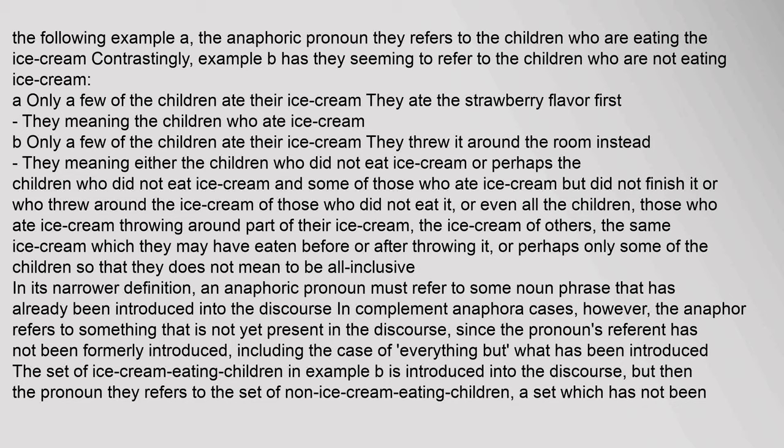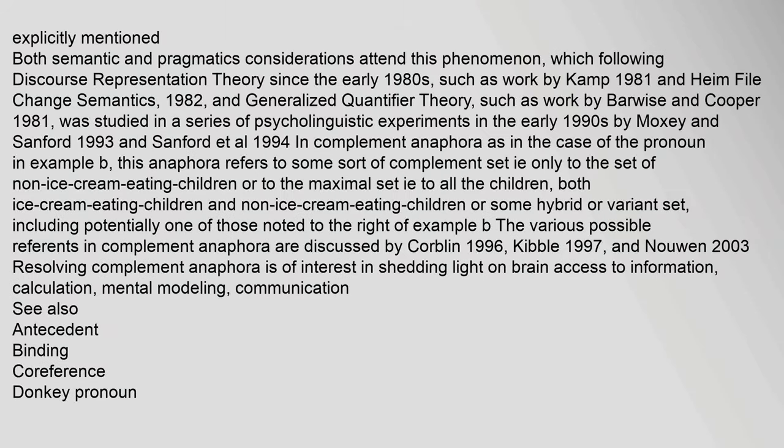In its narrower definition, an anaphoric pronoun must refer to some noun phrase that has already been introduced into the discourse. In complement anaphora cases, however, the anaphor refers to something not yet present in the discourse, since the pronoun's referent has not been formerly introduced — including the case of everything but what has been introduced. The set of ice cream-eating children in example (B) is introduced into the discourse, but then the pronoun 'they' refers to the set of non-ice-cream-eating children, a set which has not been explicitly mentioned. Both semantic and pragmatic considerations attend this phenomenon.